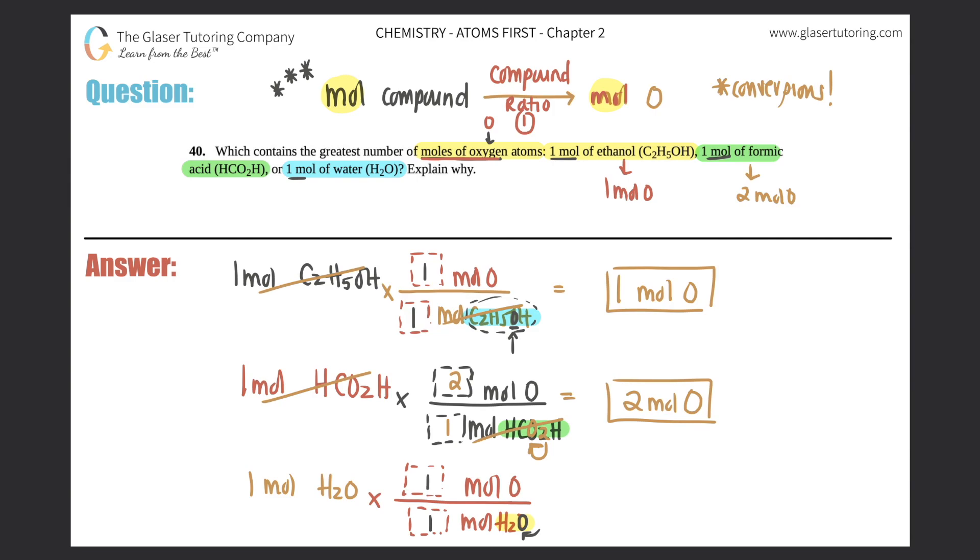So it's one mole of oxygen for one mole of H2O. Mole of H2O cancels out. One times one divided by one is one mole of oxygen, and that's your answer for the third one.